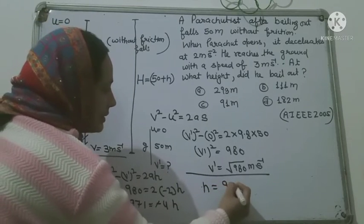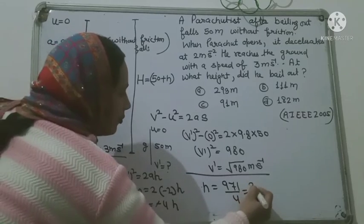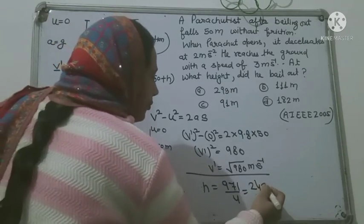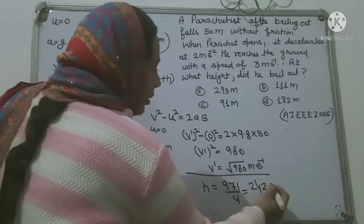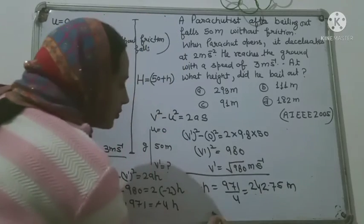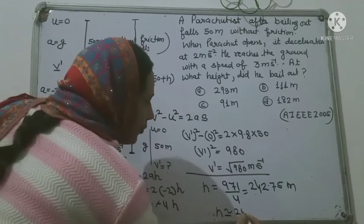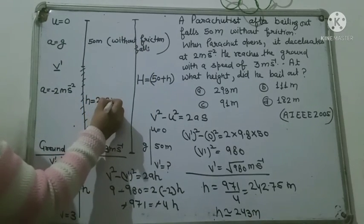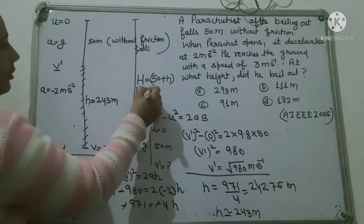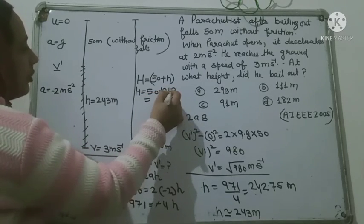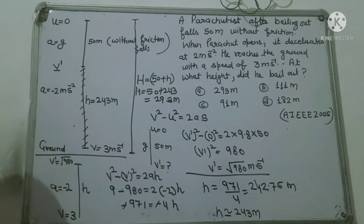H = 971 divided by 4 = 242.75 meter, जिसको हम approximately 243 meter लिख सकते हैं. तो H की value आ गई 243 meter. अब हमें निकालना है capital H = 50 + 243 = 293 meter. तो answer है 293 meter — 1st option is your correct option.